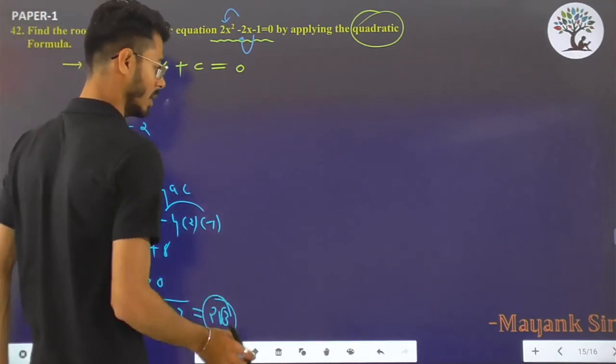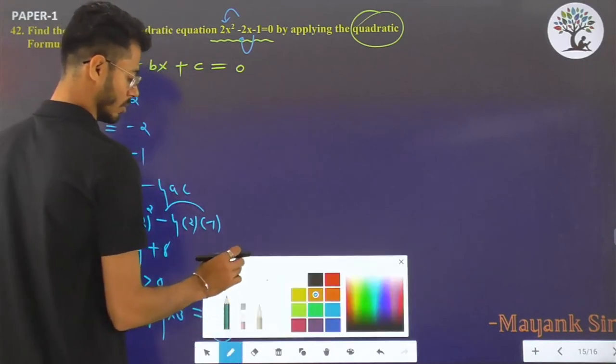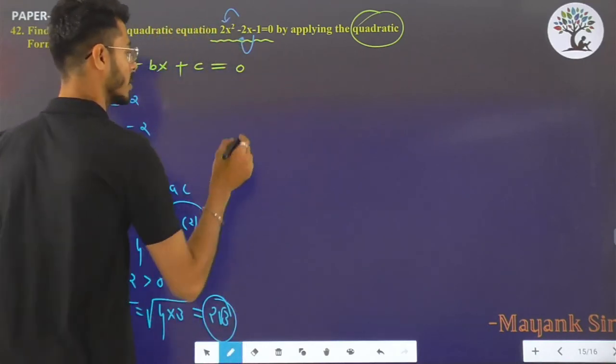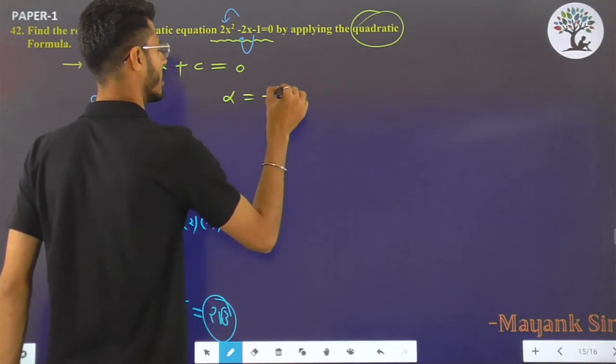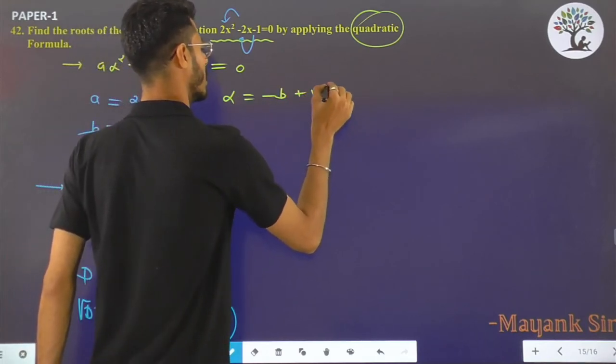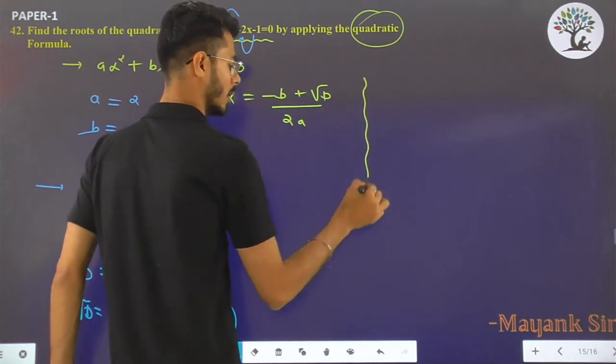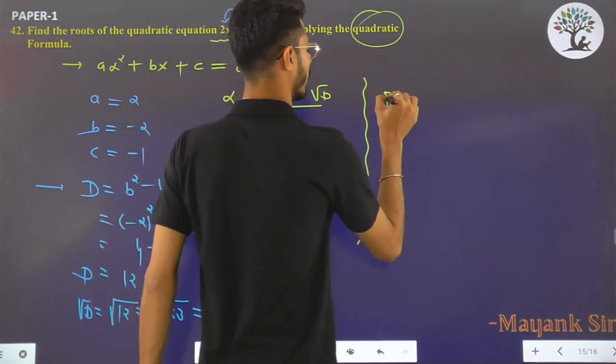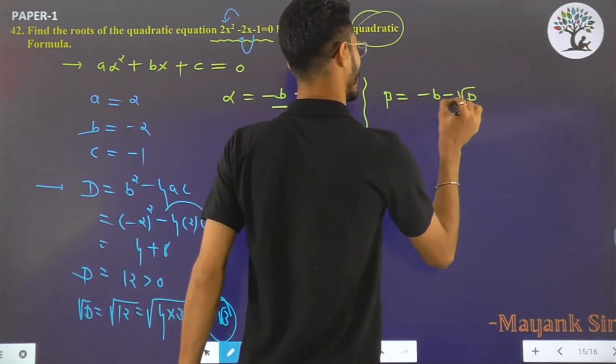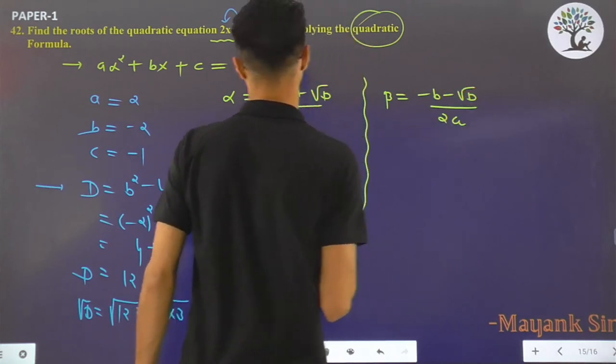As we know, the roots formula for this quadratic equation, that is alpha and beta: α = (-b + √D) / 2a and β = (-b - √D) / 2a.